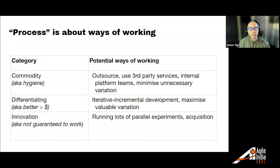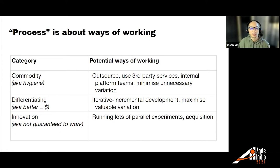Process is about ways of working. Depending on what stage the product capability is at, you want to work in different ways. In innovation, you might want to do lots of parallel experiments. In differentiating, your kind of typical iterative incremental development. In commodity, you might outsource or use third-party services — the appropriate ways of working change because you're trying to do different things.